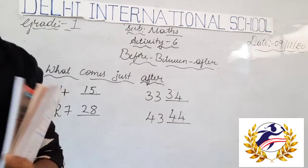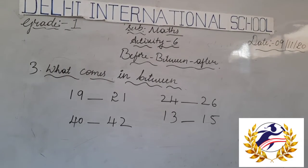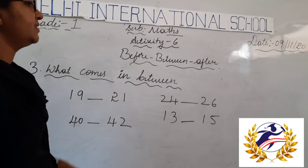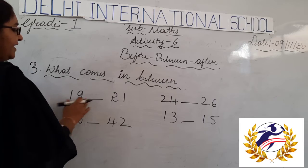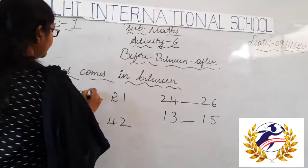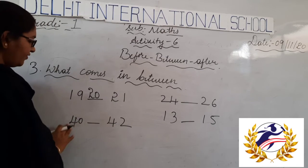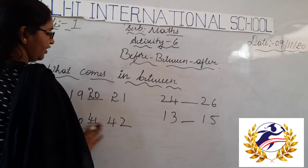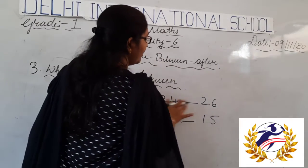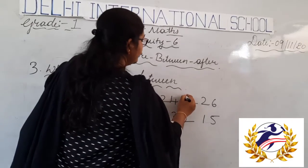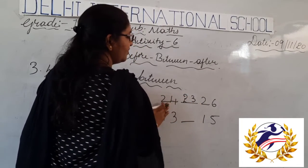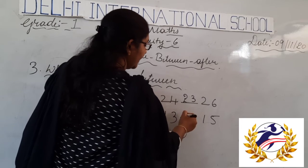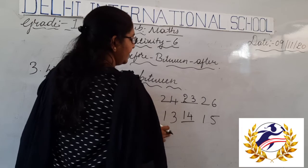Next, we will learn between numbers. What comes just between 19 and 21? That is 20. Between 40 and 42 — after 40 comes 41, and after 41 comes 42, so 41 comes in between 40 and 42. Between 24 and 26, what comes after 24? That is 25, so 25 comes between 24 and 26. Between 13 and 15, 14 comes in between.